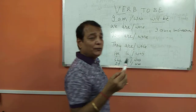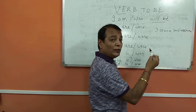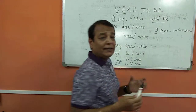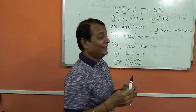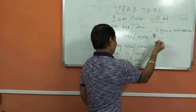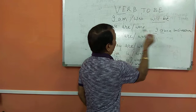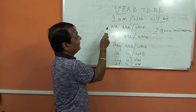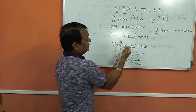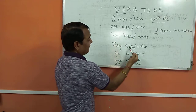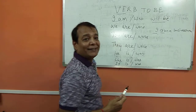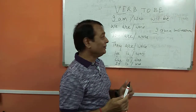Here you see the construction — how you use the verb. This is called subject-verb agreement. We cannot say 'I are' or 'he are.' We have to see the agreement first: I am, we are, you are, they are, he is, she is, it is. That's called subject and verb agreement.